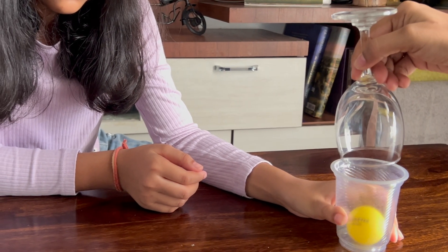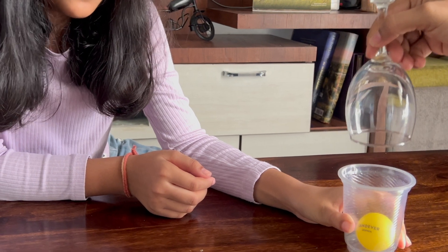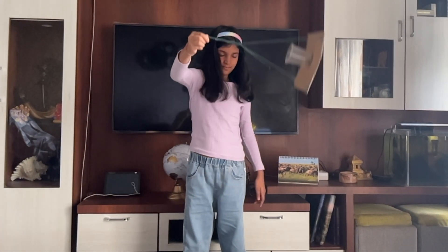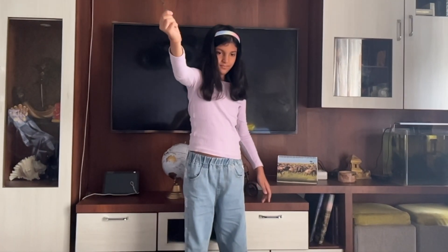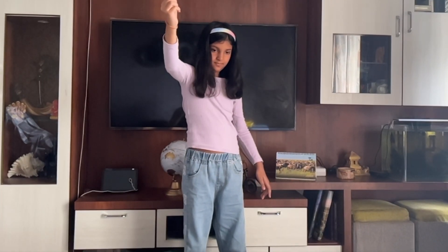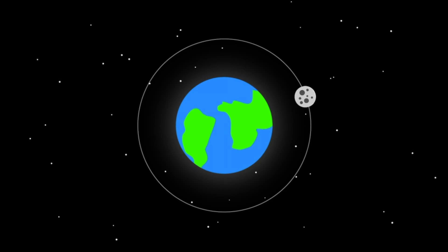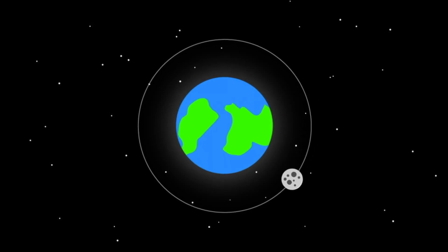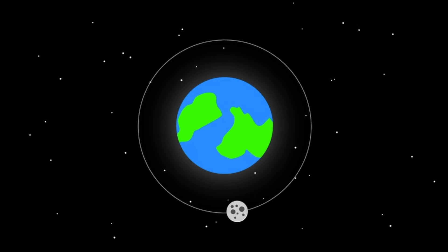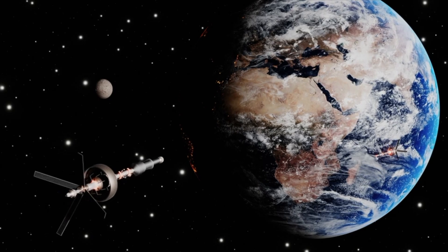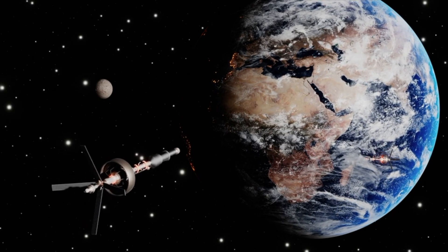When we stop, the force of gravity will become more and the ball will fall. Similarly, in the coin experiment, the coins are not falling because of the centripetal force generated due to the tension in the threads. The same phenomena happens for planets and moons — because of the centripetal force generated by gravity, the moon keeps rotating around the earth, and the same applies for satellites revolving around the earth.